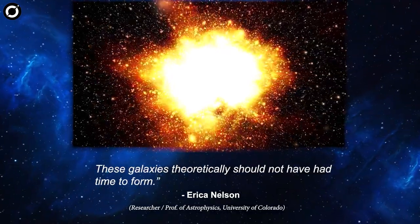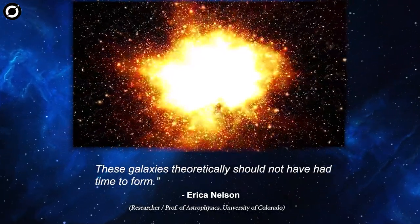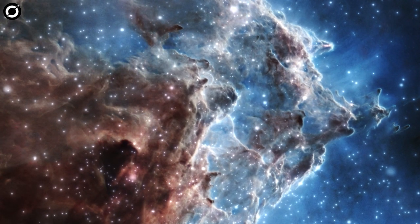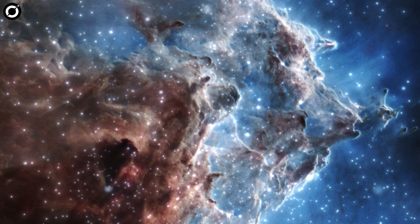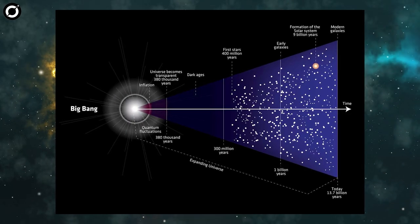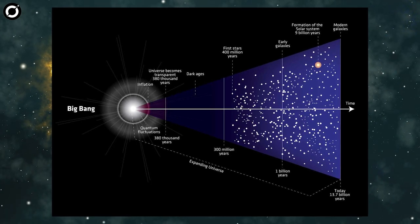While scientists don't know exactly when the first clumps of stars began to merge into the beginnings of the galaxies we see today, cosmologists have previously estimated that the process began slowly, taking shape within the first few hundred million years after the Big Bang.